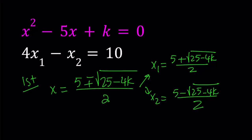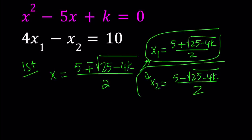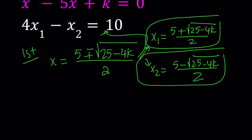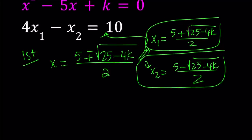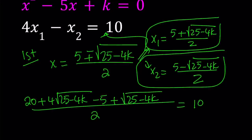We have those two roots in terms of k, and we are given a relationship, so we know how x1 and x2 are related. Let's plug these into the equation. 4 times x1 — I'm going to multiply the numerator by 4 because they have a common denominator. So if you multiply the numerator of x1 by 4, you get 20 plus 4 times the square root of 25 minus 4k. And now subtract x sub 2 — minus 5 plus the square root of 25 minus 4k. All of that is divided by 2, and that equals 10.